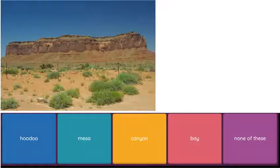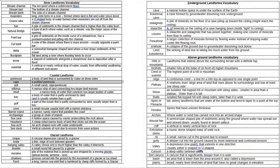Here's what the assignment looks like. I'm going to show you a picture of some shape of the land somewhere, and it has multiple choice answers. You have to read the definition for each one of those and see which one matches what you see in the picture. The vocabulary is broken up into sections: river landforms, coastal landforms, glacial, above ground, and underground. That's a good place to start.